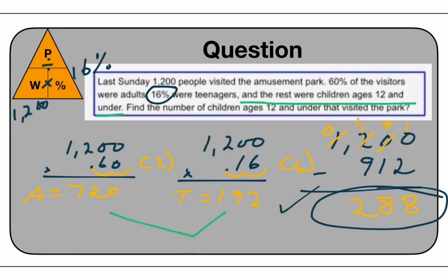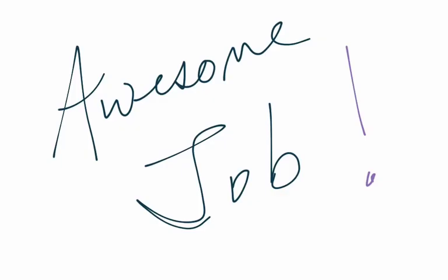The final answer is 288 people were children ages 12 and under. So those are just some basics on percent review and then solving questions with multiple percents. Great job.